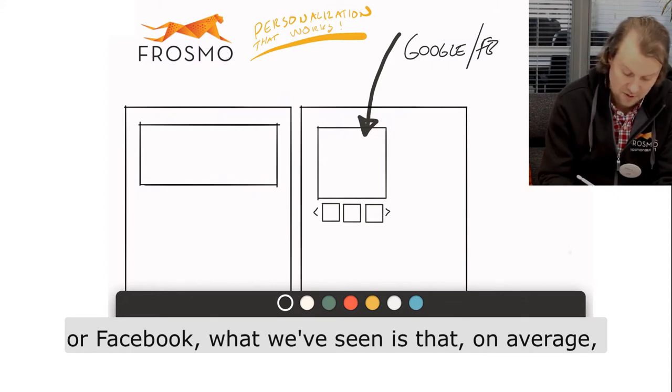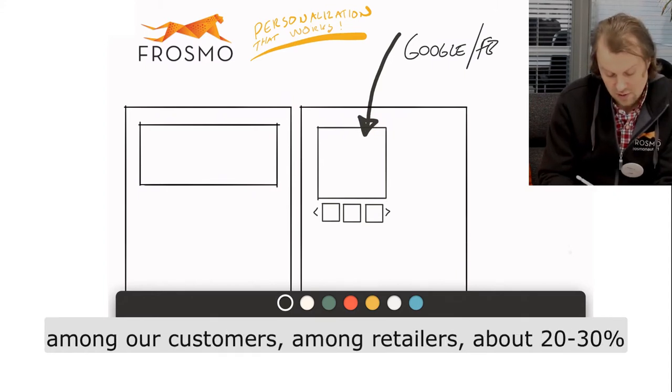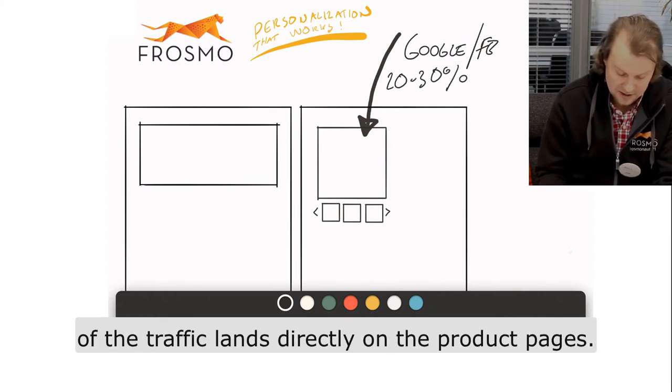What we've seen is that on average, among our customers and retailers, about 20 to 30% of traffic lands directly to product pages.